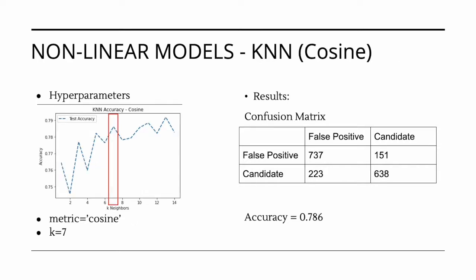For our second k nearest neighbor model, we evaluated a model using cosine similarity. As with the k nearest neighbor model using Euclidean distance, we needed to find an optimal k value. To do this, k values between 1 and 15 were evaluated in order to determine the optimal k value. As with Euclidean distance, the elbow method was used and it was determined that a k value of 7 would provide the best outcome. This resulted in our k nearest neighbor model using cosine similarity having an accuracy of 0.786. So far, cosine similarity slightly outperforms Euclidean distance in terms of accuracy.